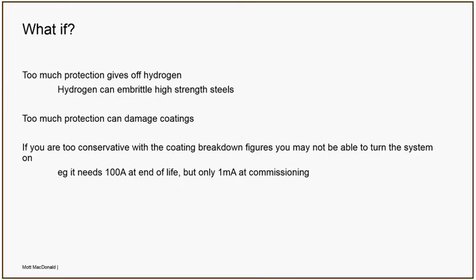It would be nice to think that with an impressed current system you can just turn it up to whatever you need and be really conservative on the coating breakdown figures — design the system so it can protect the totally bare pipe. The trouble is that on day one you need to demonstrate to the pipe owner that your CP system works. If you've designed it to run happily at 100 amps but only needs one milliamp when you turn it on, that gives all kinds of ridiculous problems — it's like trying to turn the volume control from 0 to 0.0001 when it runs from 0 to 10. You can't just stick conservative numbers in and get a safe design.